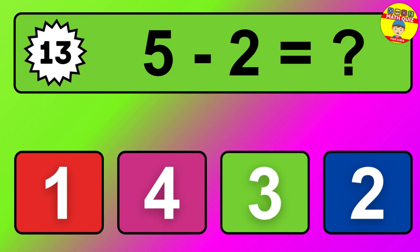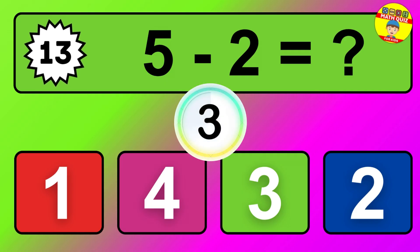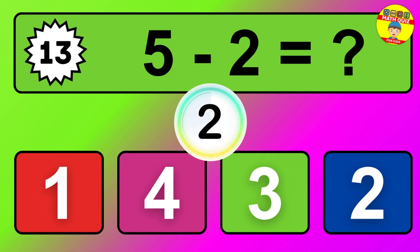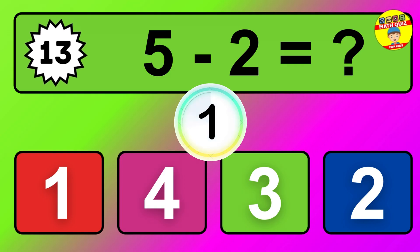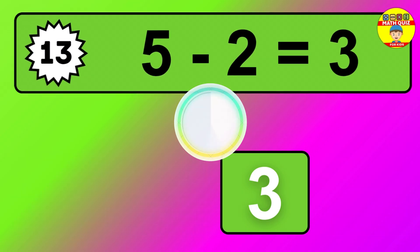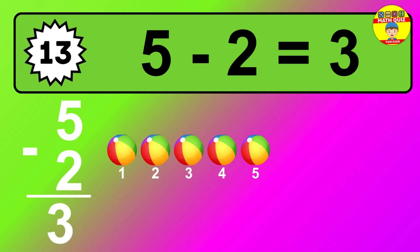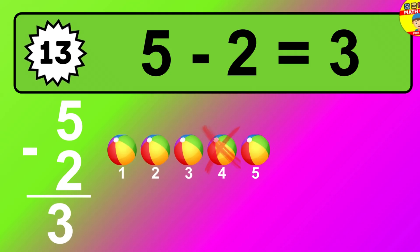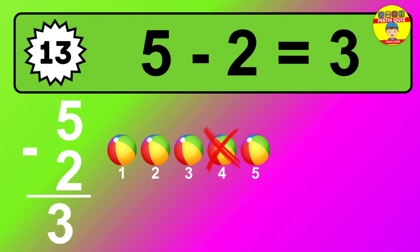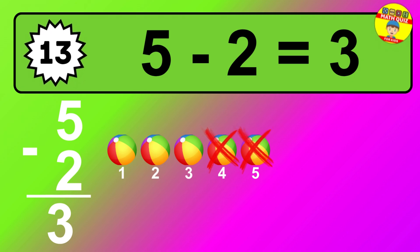Question 13. 5 minus 2 equals what? The answer is 5 minus 2 is 3. Let's count it: 1, 2, 3.